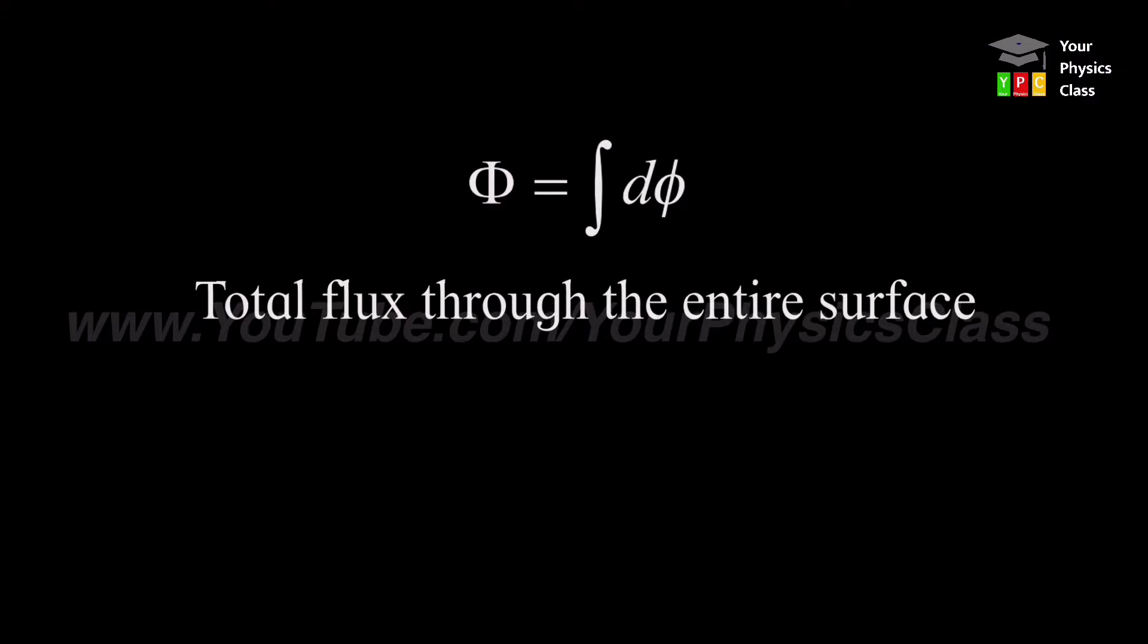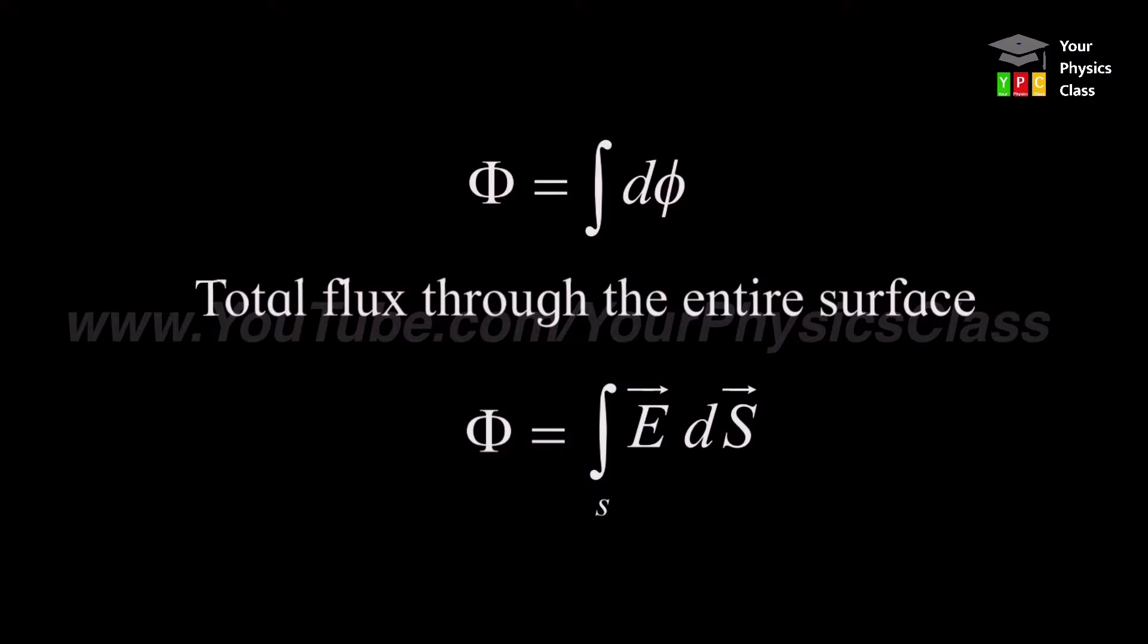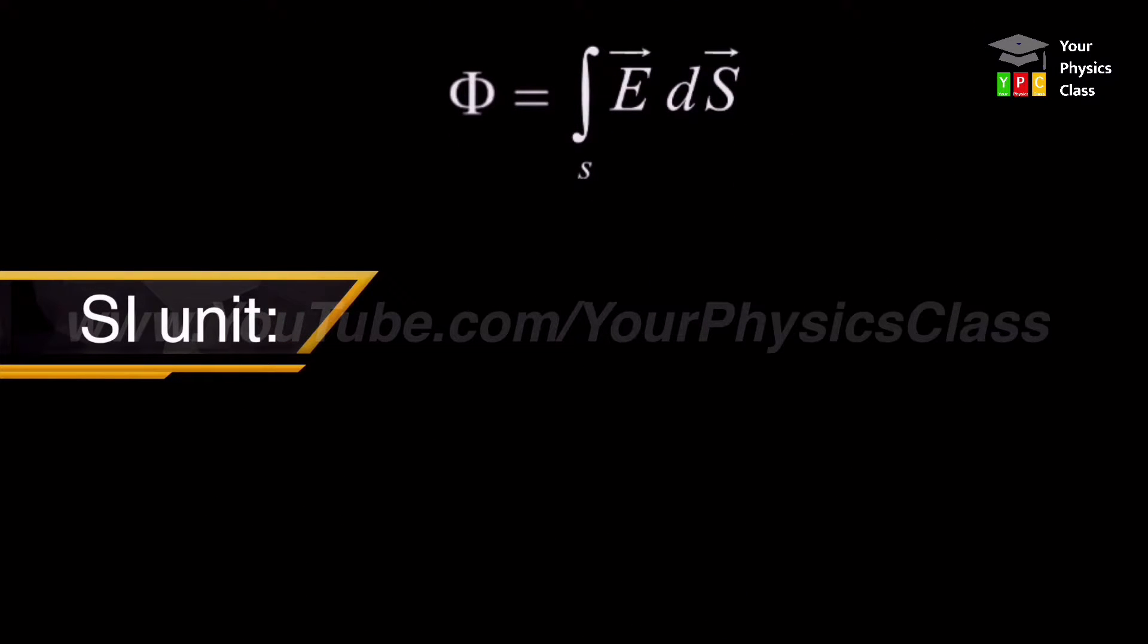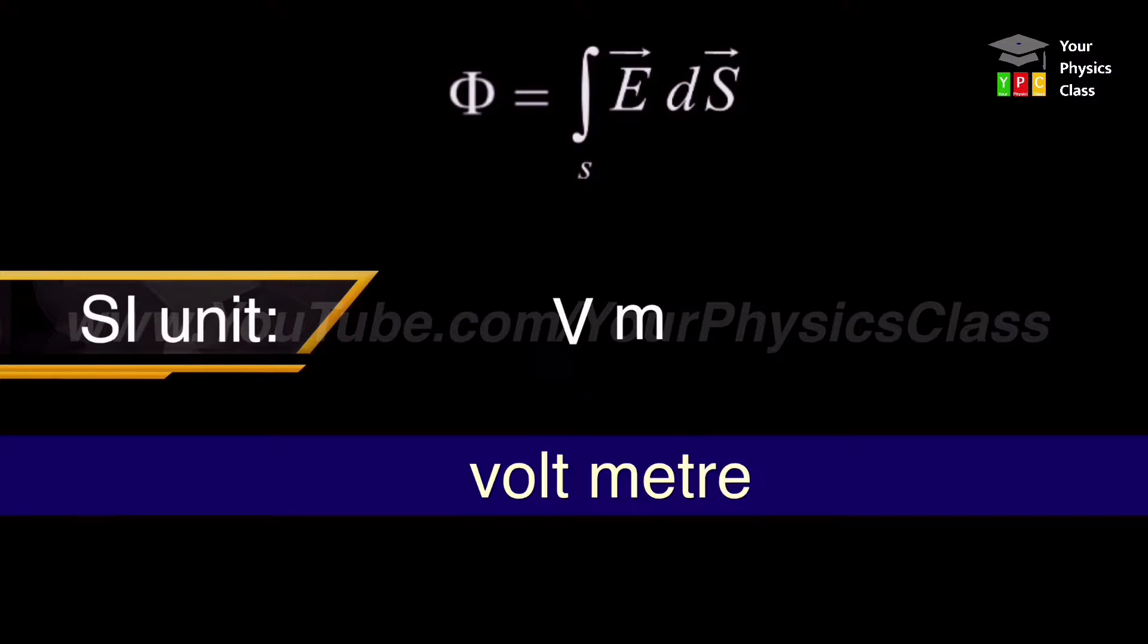Total flux through entire surface is given by integration over the surface E dot dS. The SI unit of electric flux can be calculated using the same formula. SI unit of electric field is volt per meter and SI unit of surface area is square meter. The product of these two will be volt meter.